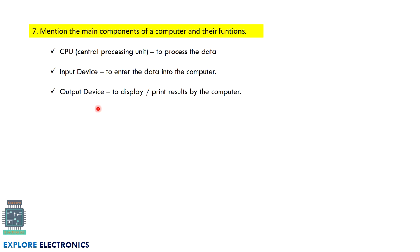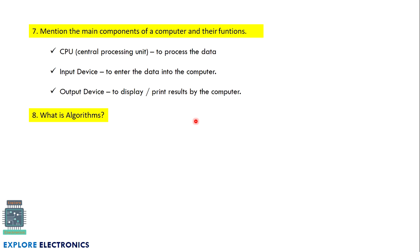Mention the main components of a computer and their functions. This is a basic question you may get in lab viva. CPU is the heart of the computer — it is used to process the data and produce the output. We have input devices to give data into the computer and output devices to display the values processed by the CPU.